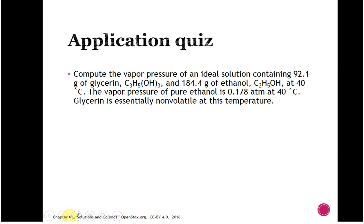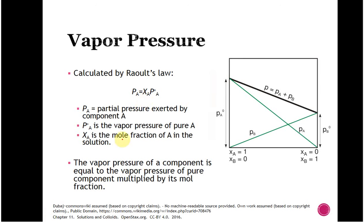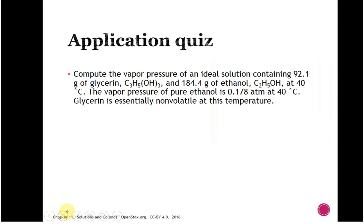Let's compute the vapor pressure of an ideal solution containing 92.1 grams of glycerin and 184.4 grams of ethanol at 40°C. The vapor pressure of pure ethanol is 0.178 atm at 40°C, and glycerin is non-volatile. To use Raoult's Law we need mole fractions, so we first convert grams to moles for both glycerin and ethanol.